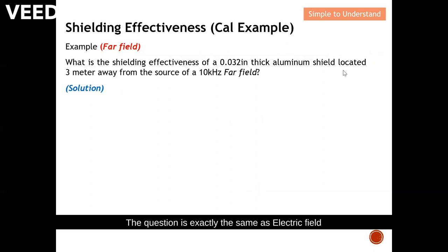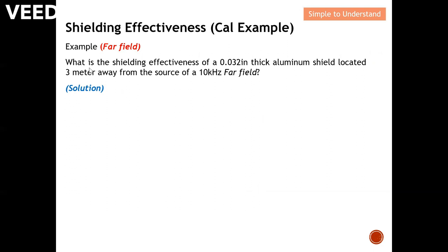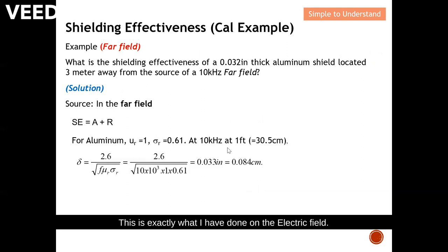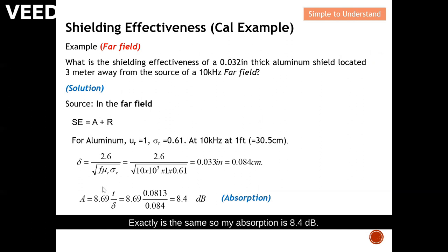Last but not least, let's move to the far field example. The question is the same as the electric field example, except the point of observation is changed to 3 meters away. For far field, we only need to consider absorption and reflection — no B-term. The absorption is exactly the same as the electric field calculation, giving 8.4 dB.